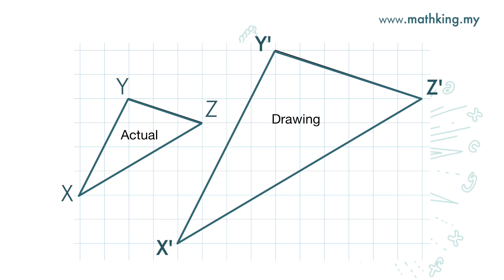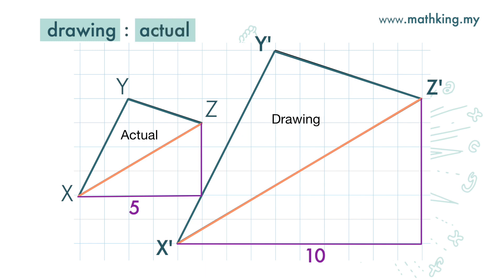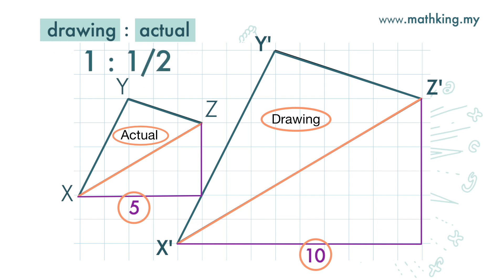We can take the ratio of this length to this length, but both of them are slanting lines. To find the length, we draw a right angle triangle here and here too. It is five units here and ten units here. Scale is drawing length to actual object length, so it is ten to five. To simplify, we divide both sides by ten and get the scale of one to one-half. Of course, we can use other lengths — for example, this one and this one — and we will get the same answer.